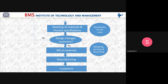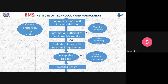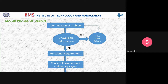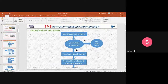The product is manufactured and reaches customers through marketing, purchasing, and accounts. Even a simple product like a pen must go through all these major design phases. This is an important topic from an examination perspective — a 10-mark question could ask you to explain the major phases of design with a neat block diagram.